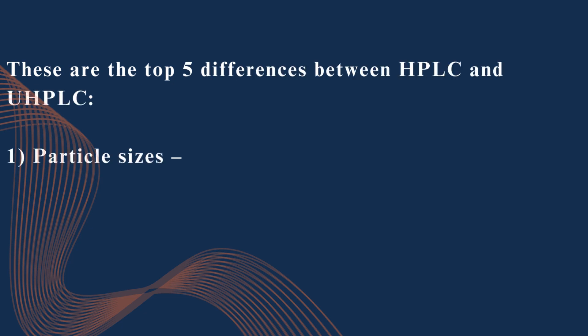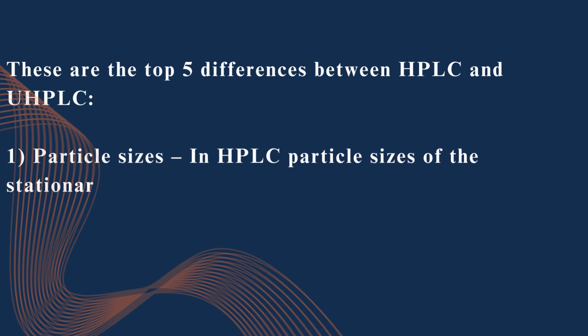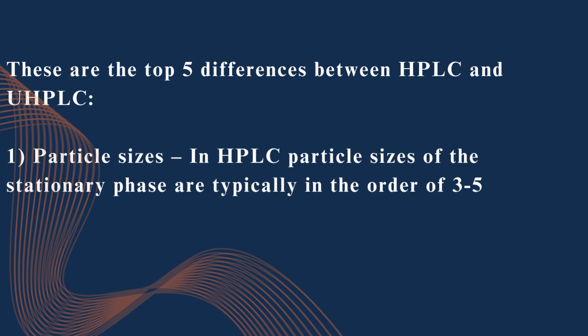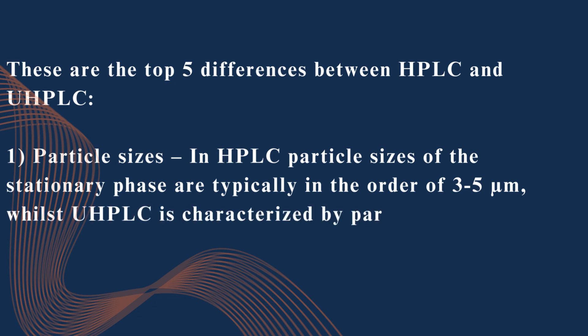Particle sizes. In HPLC, particle sizes of the stationary phase are typically in the order of 3 to 5 micron, whilst UHPLC is characterized by particles of 2 micron or less.